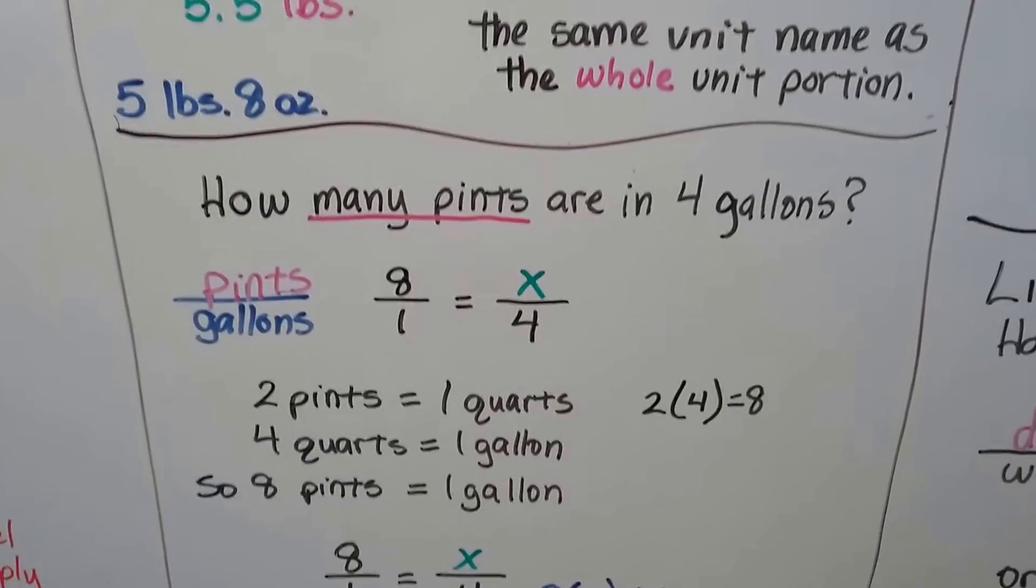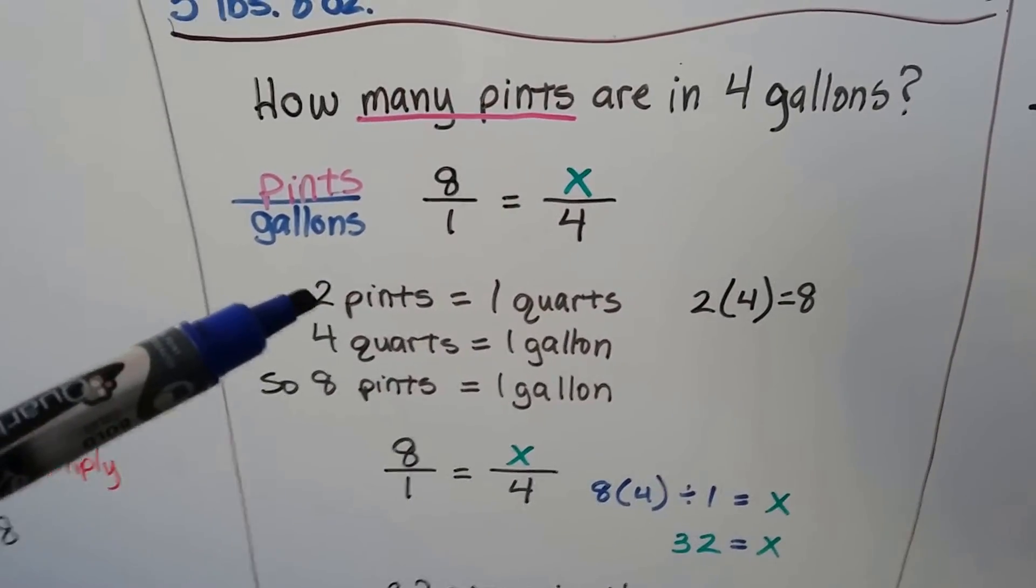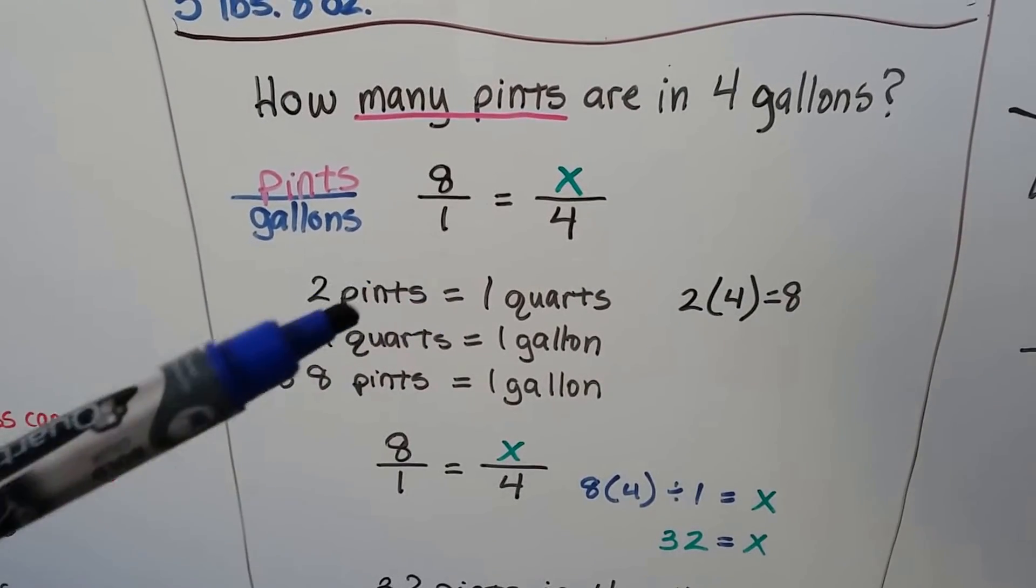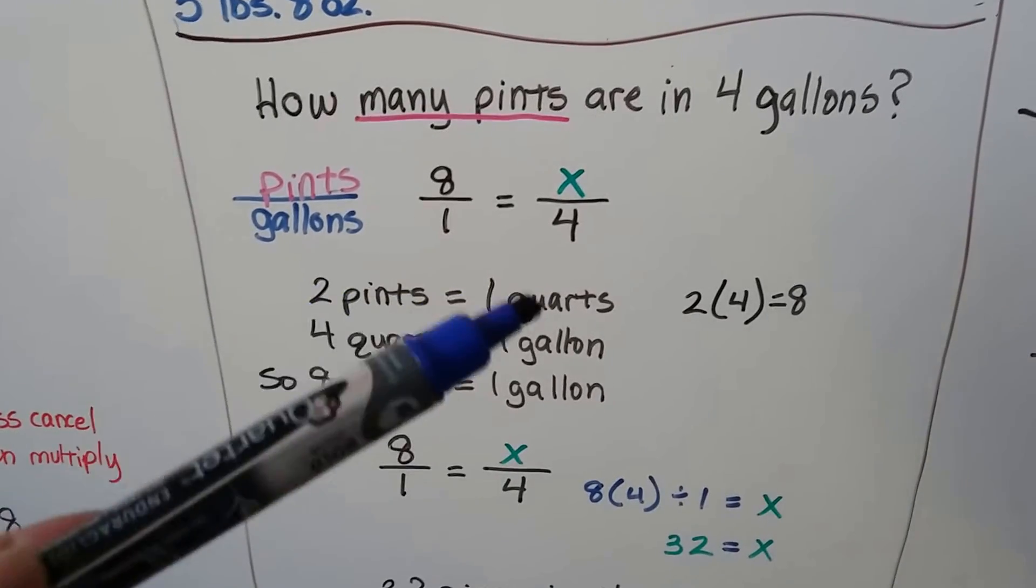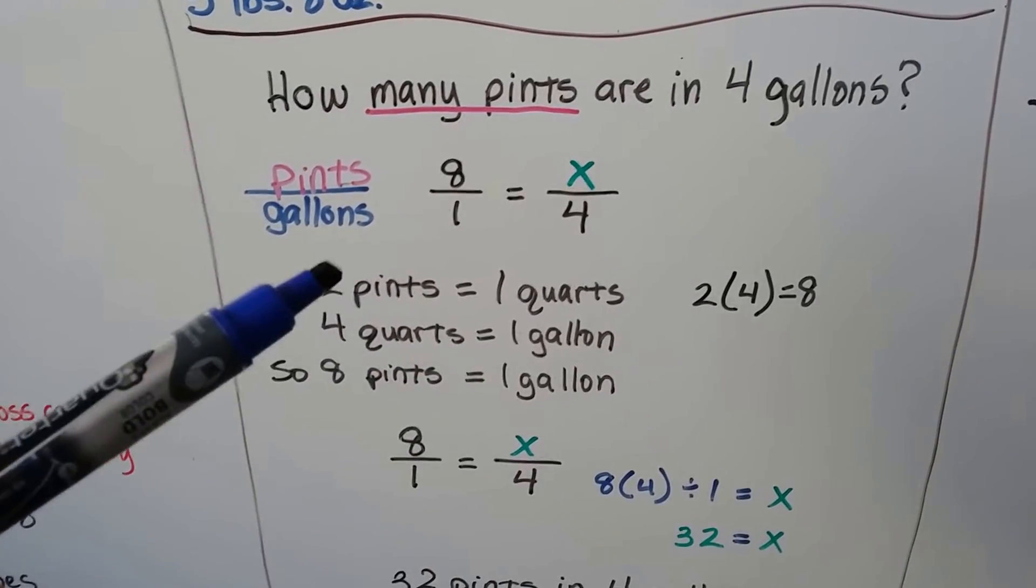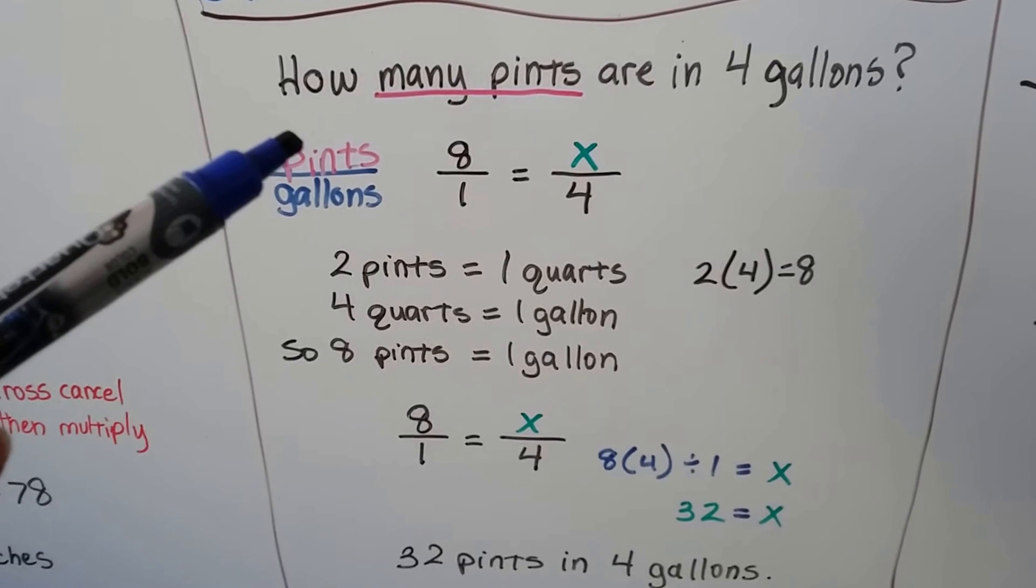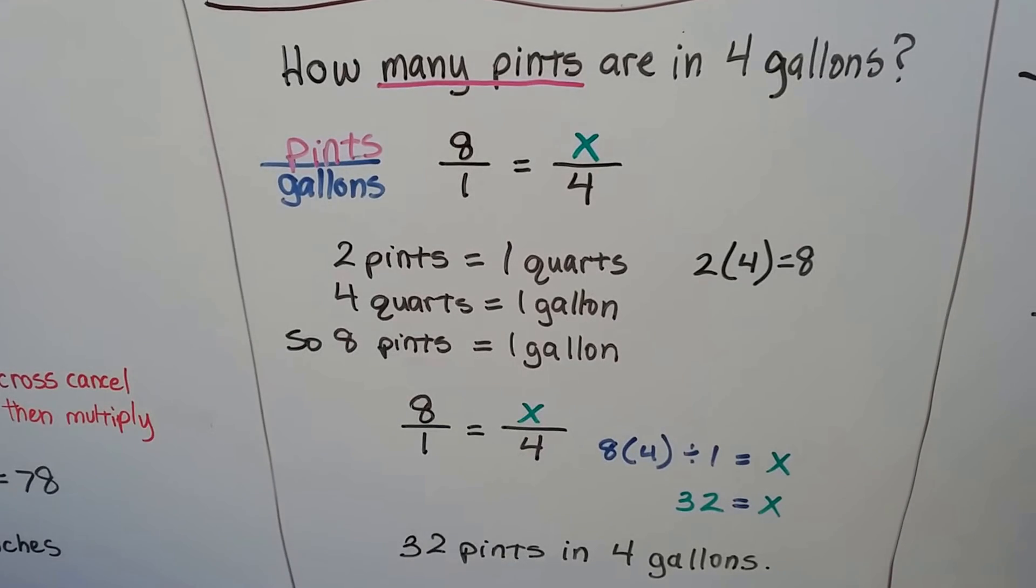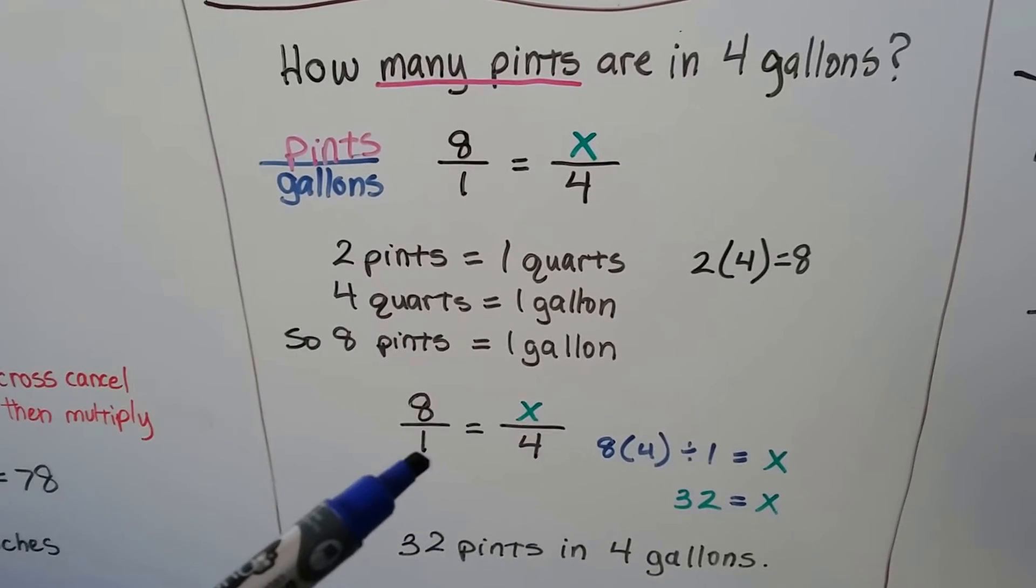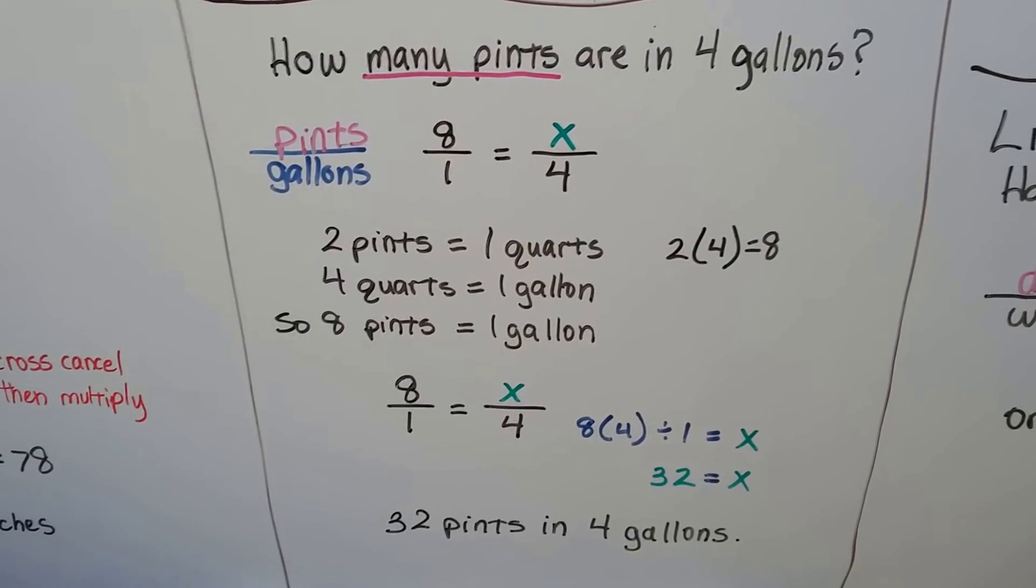And be careful if you have to convert a couple times. How many pints are in 4 gallons? So you might remember that there's 2 pints that are equal to 1 quart, but how many pints are in a gallon? So you might have to convert the pints to quarts and then the quarts to a gallon. This would be 2 times 4 would be 8 pints equals 1 gallon. We're looking for pints. So that's our numerator. So 8 pints is 1 gallon. We want to go to 4 gallons. So what's X? We do 8 times 4 is 32 divided by that last number, the 1, and we get 32 pints in 4 gallons.